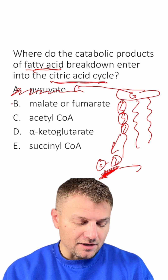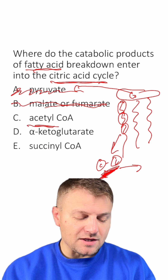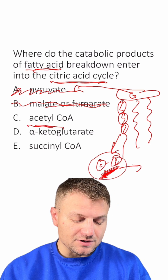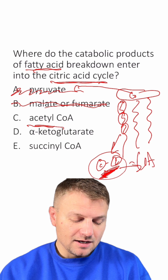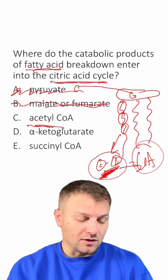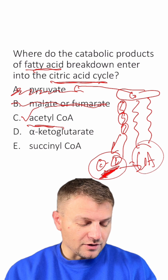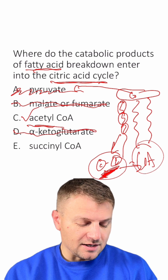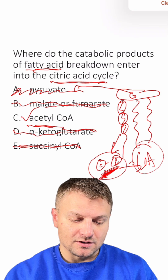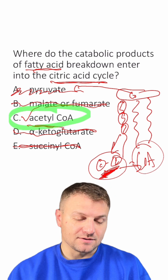B, malate fumarate — nope. C, acetyl-CoA. Remember that acetyl-CoA is just talking about this acetyl group plus the coenzyme A that's going to help it get into the Krebs cycle. That looks like the answer. D, acetyl-glutarate — nope, that's not the right answer. And E, succinyl-CoA — nope, that's not right either. This is why C is the right answer.